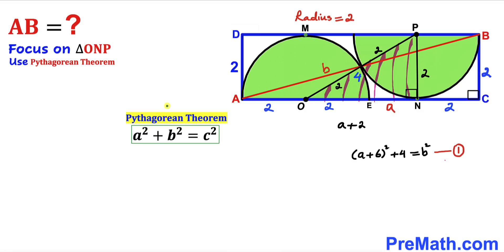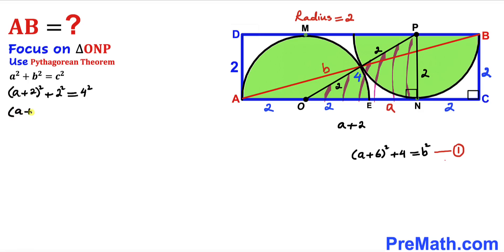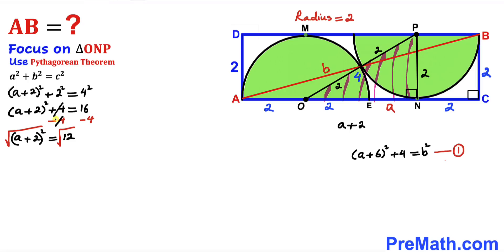Focusing on right triangle ONP and applying the Pythagorean theorem, the hypotenuse is OP = 4 and the two legs are PN = 2 and ON = (a + 2). So: (a + 2)² + 2² = 4², which gives (a + 2)² + 4 = 16. Subtracting 4 from both sides: (a + 2)² = 12.